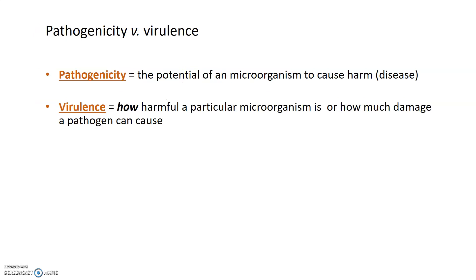When talking about how pathogens cause disease, there are two terms that come up. The first is pathogenicity, which is the potential of any microorganism, virus, or bacteria to cause harm to its host or to cause disease. Virulence is a little different — it refers to how harmful that particular microorganism is to the host, or how much damage that pathogen can cause. So pathogenicity is the potential to cause disease, whereas virulence is how bad that disease is going to be.